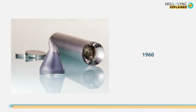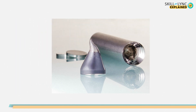It was in 1960 that the first metallic glass was made from the rapid cooling of a molten mixture of gold and silicon. Following this, a large number of elements were put together for obtaining metallic glasses.